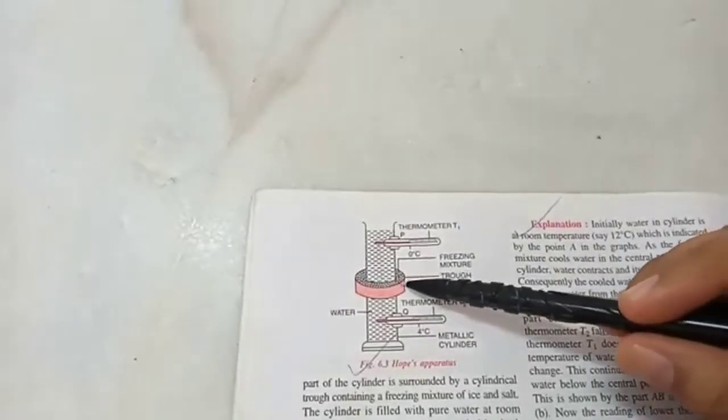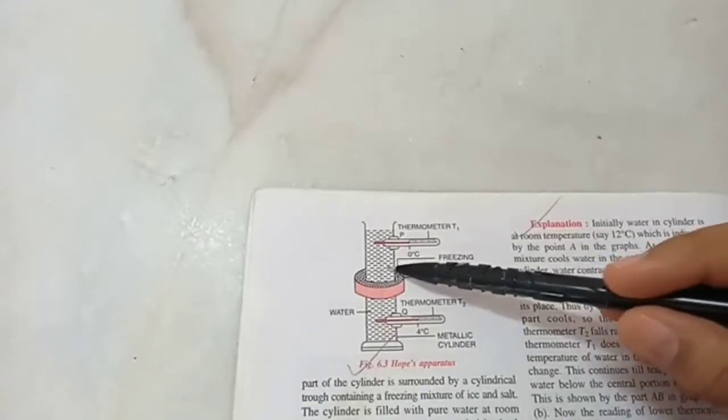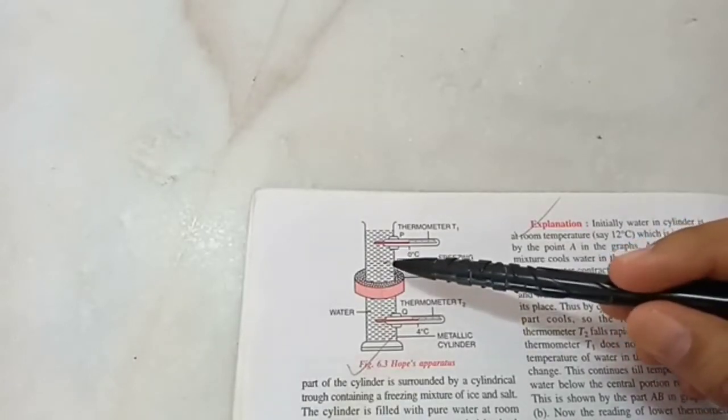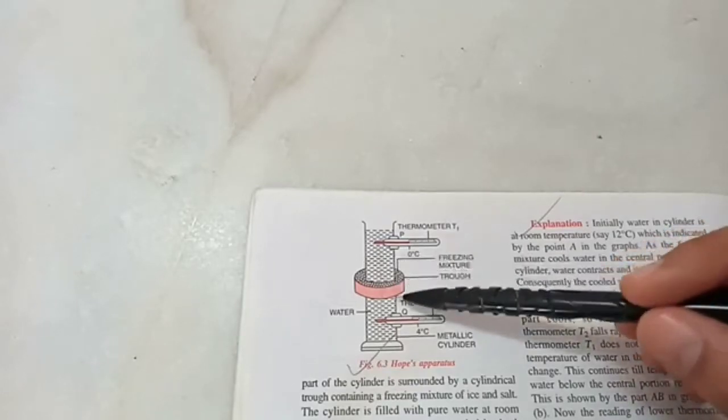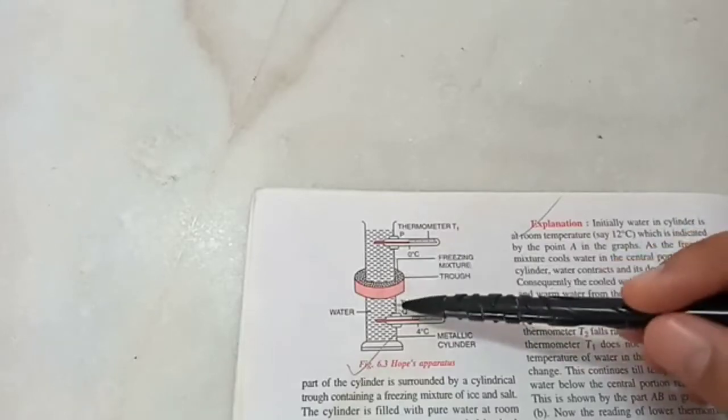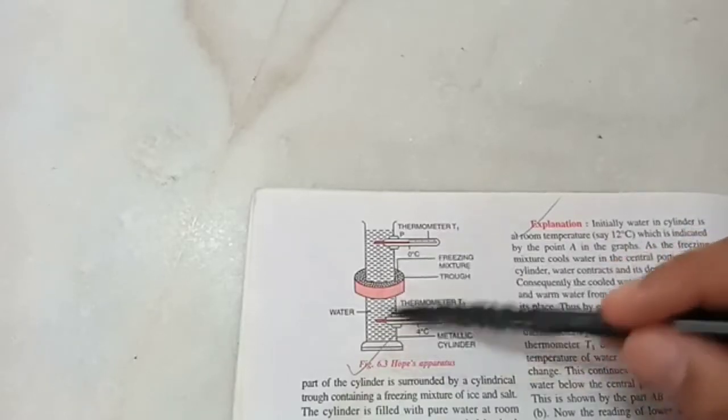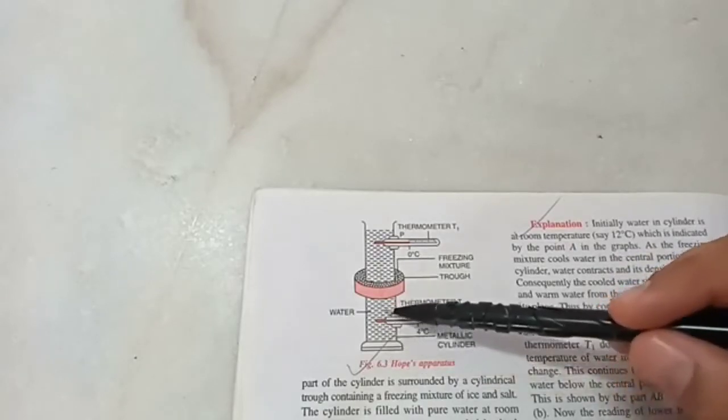Now surprisingly, the temperature of the upper part of the water will continue decreasing. 4, 3, 2, 1, 0. Because below 4 degree Celsius the water's density is lesser. It will float. Water at 3, 2, 1 degree Celsius float. They are lighter than the water at 4 degree Celsius. Remember water at 4 degree Celsius is the densest and it is always at the bottom.